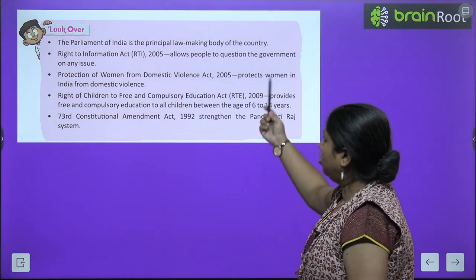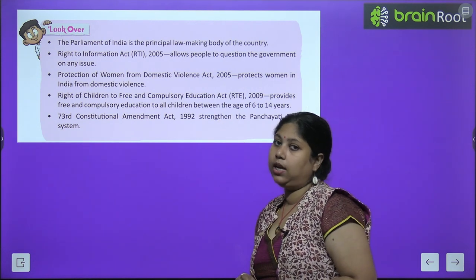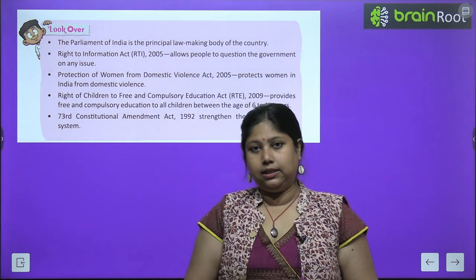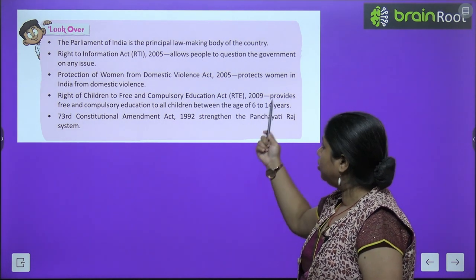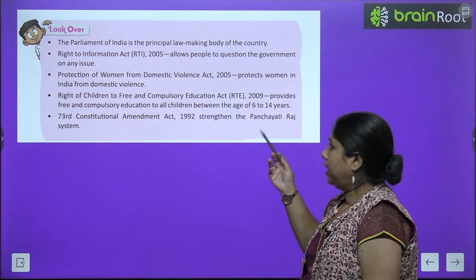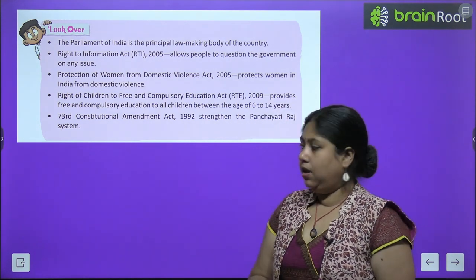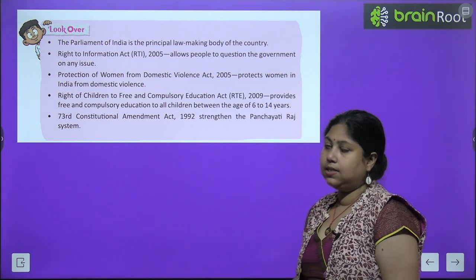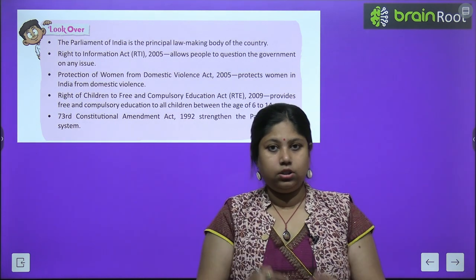Quick recap: The Parliament of India is the principal law-making body of the country. The Right to Information Act was launched in 2005 — it allows anyone who needs information about a government body to file a petition or appeal. The Protection of Women from Domestic Violence Act was also launched in 2005 to protect women from household violence. RTE was launched in 2009 — children from age 6 to 14 get free and compulsory education. The 73rd Constitutional Amendment Act was launched in 1992 to improve the Panchayati Raj system, with one-third seats reserved for women.